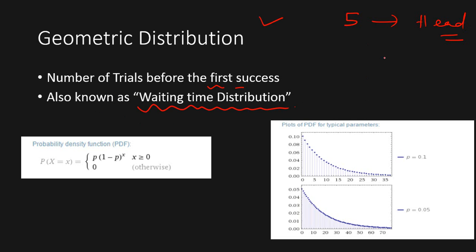It's also known as waiting time distribution. That means it models or gives an idea of how many times one has to wait, or how many experiments have to be made before we get the desired outcome.